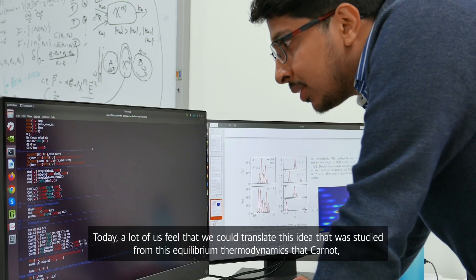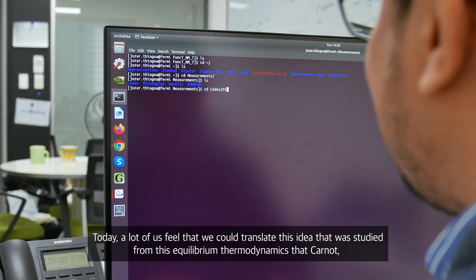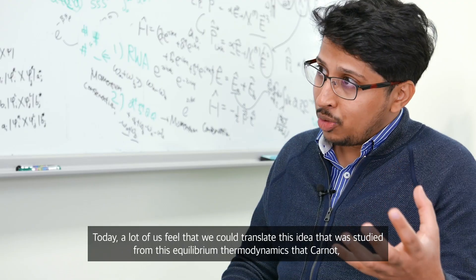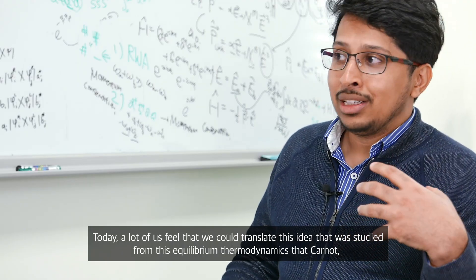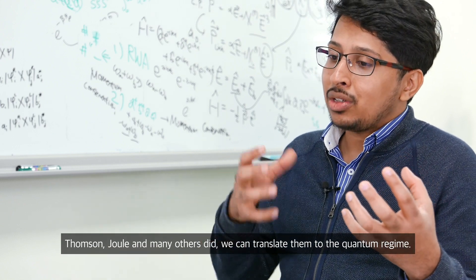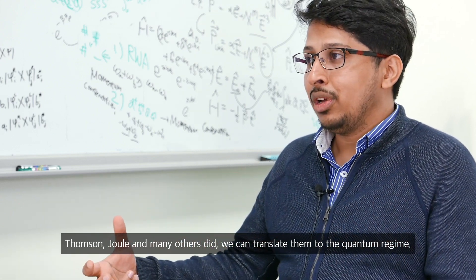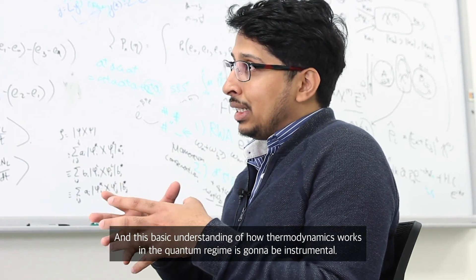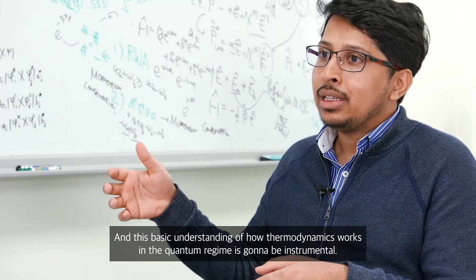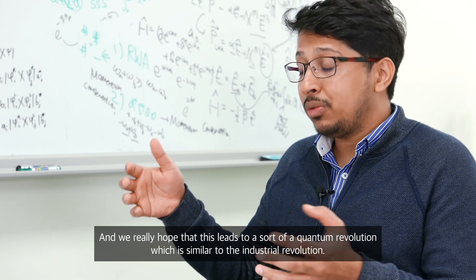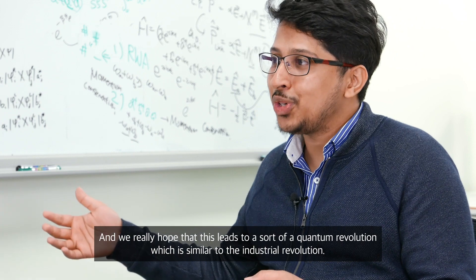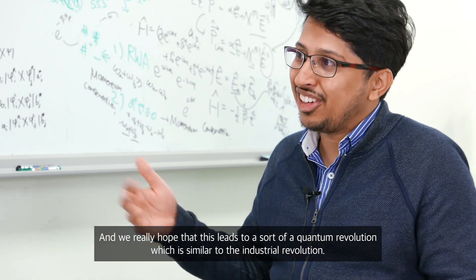Today, a lot of us feel that we could translate these ideas that were studied from this equilibrium thermodynamics that Carnot and Thomson and Joule and many others did. We can translate them to the quantum regime. And this basic understanding of how thermodynamics works in the quantum regime is going to be instrumental. And we really hope that this leads to a sort of a quantum revolution which is similar to the Industrial Revolution.